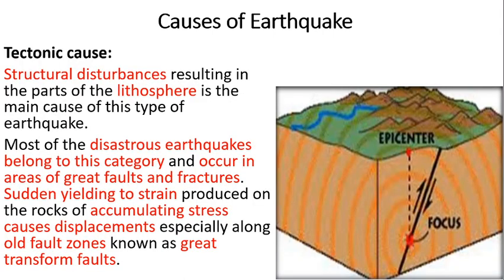Next come tectonic causes, which are the real causes behind very large earthquakes. These cause very high levels of structural disturbance in the solid part of the Earth called the lithosphere and are disastrous. This mainly occurs in zones of previous faults and fractures in the Earth's surface, where sudden yielding to strain produces stress accumulating on rock, causing massive displacement in fault zones and great transform faults.